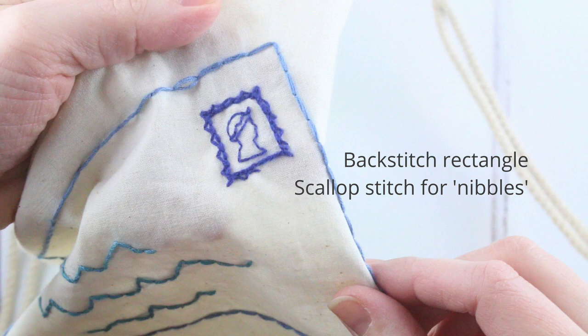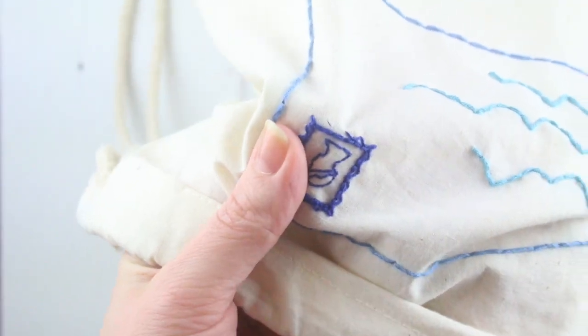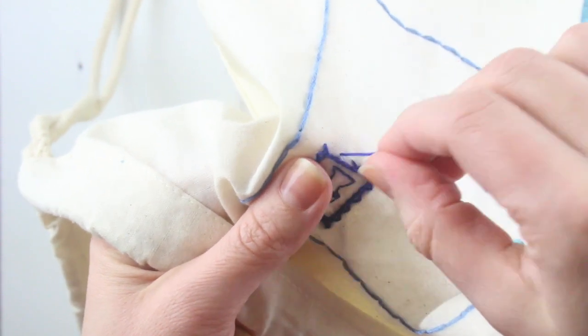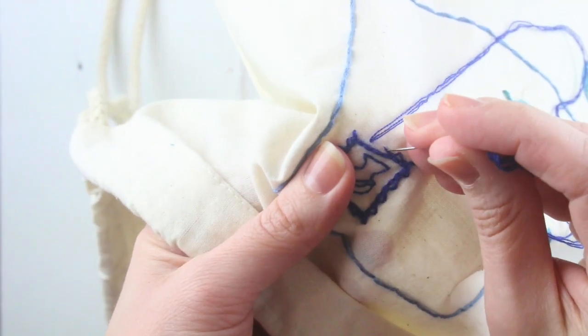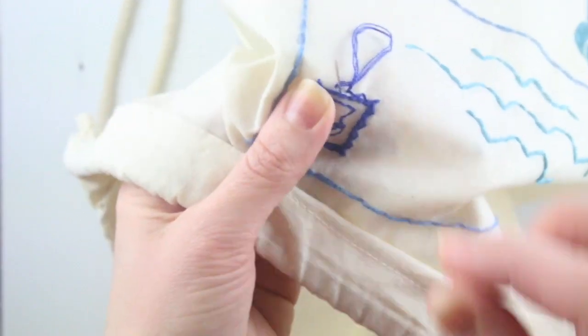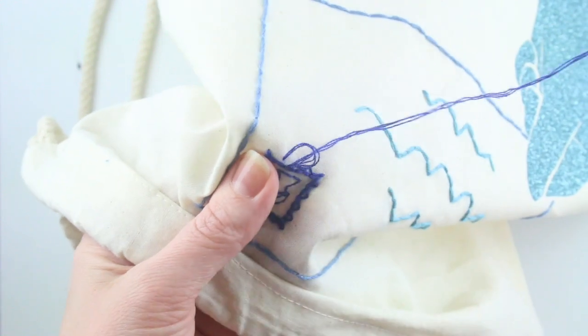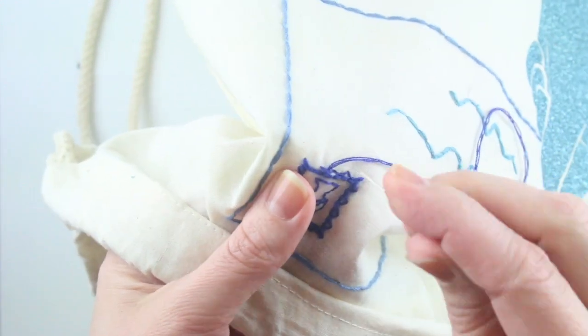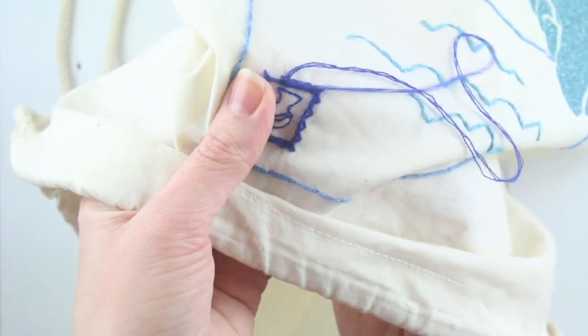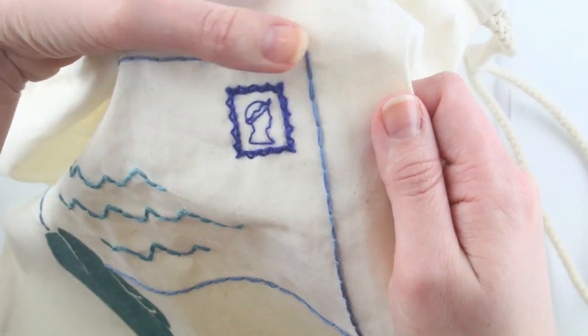These will be spaced about 3mm outside the existing stamp rectangle. Use 3 strands of thread for these. Bring the needle up and back down where you'd like the scallop to be, leaving a slight loop above the fabric. Then bring the needle back up through your fabric by the inner stamp rectangle, through your loop and sew back down through the same hole. This will create the indented nibbles. Keep creating these stitches all the way around the outside of the stamp.